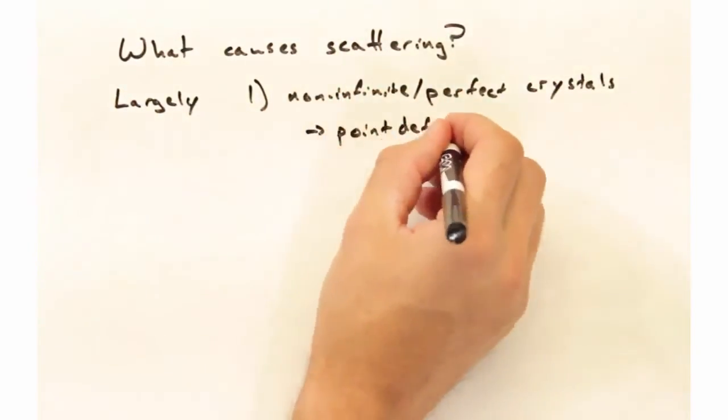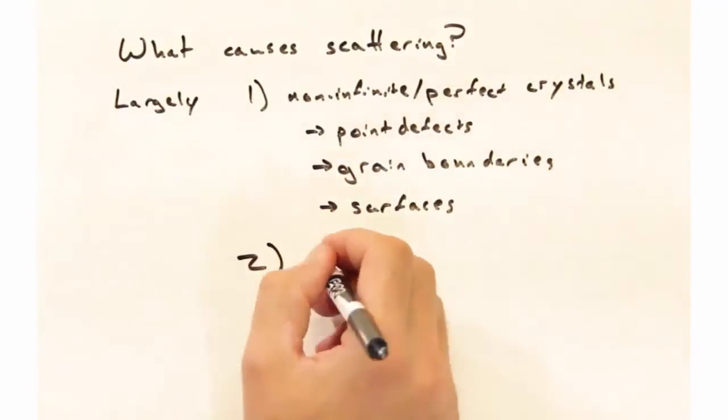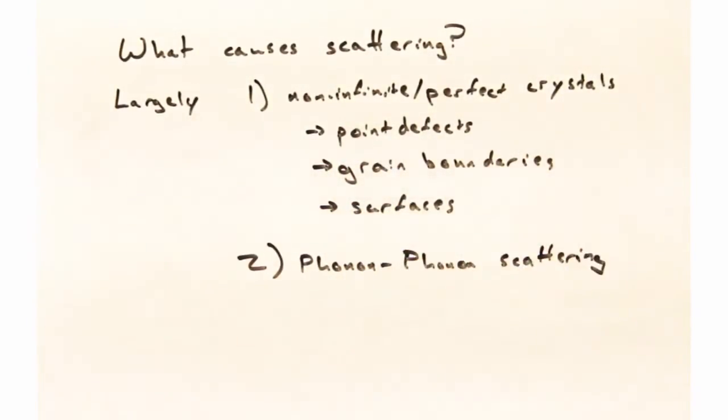Largely, we can break it down into two components. The first is that we're not working with infinite crystals, nor are they absolutely perfect. And so, in practice, you have point defects, you have grain boundaries, and you have surfaces.